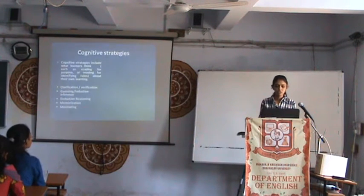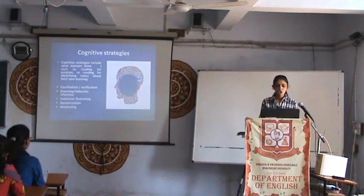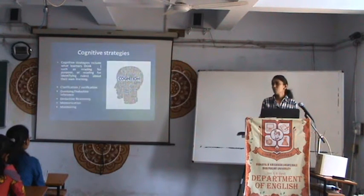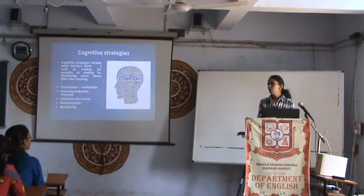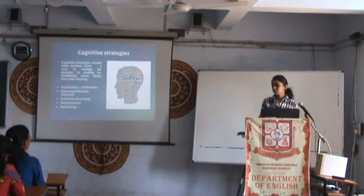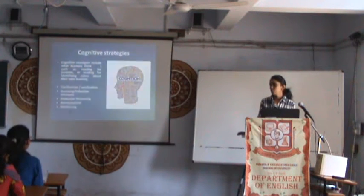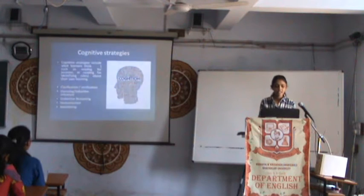First of all, Cognitive Strategies. Cognitive Strategies include what learners think, such as reading for purpose or reading for identifying rules about their own learning. Cognitive Strategies is a direct strategy used for recalling, understanding, and reviewing information. This step is used to help in learning and problem solving.